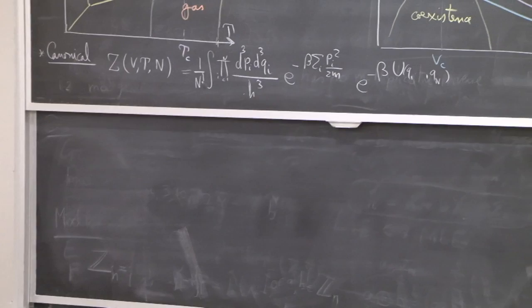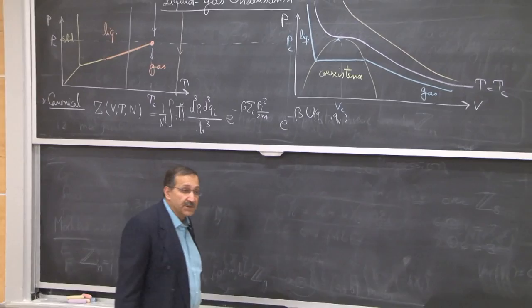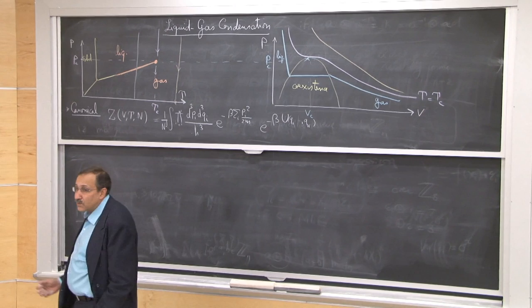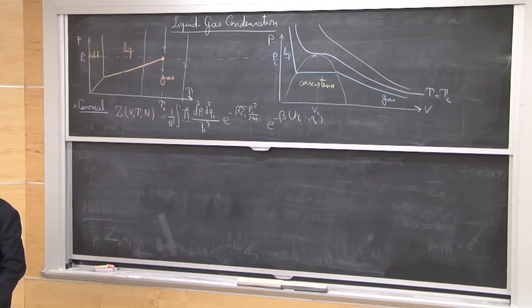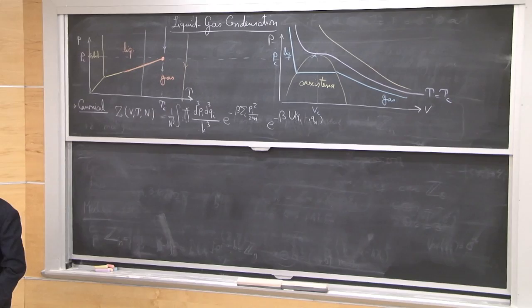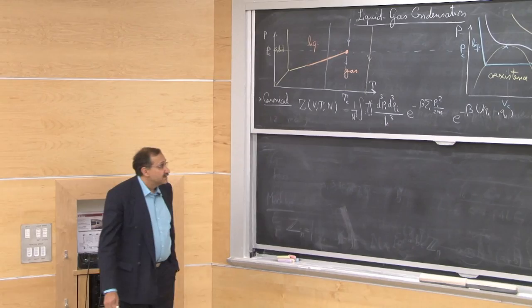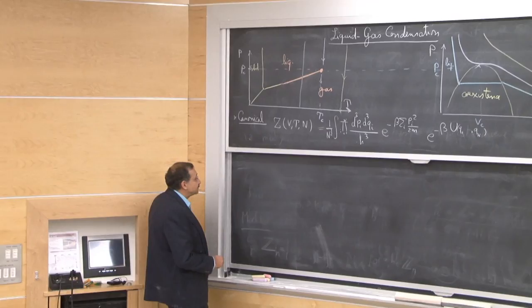If I could do these integrations for the case of an interacting gas, buried within would be the properties of the phase transition and the singularities. Last time we tried a perturbative calculation in the potential. Today we'll take another approach where the approximations and assumptions are more clearly stated.